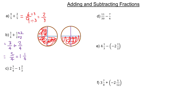Four goes into five one time. If you subtract five minus the single four, that's where the one in the numerator comes from — so it's one and a quarter. If I take this one quarter and put it up here, then I've got a full pizza — that's the one — and then there'd be the one quarter left over.